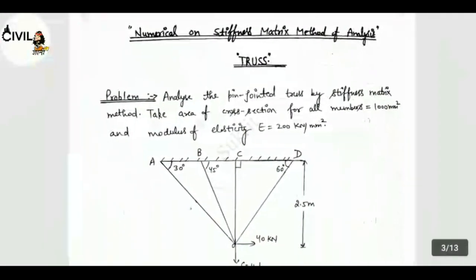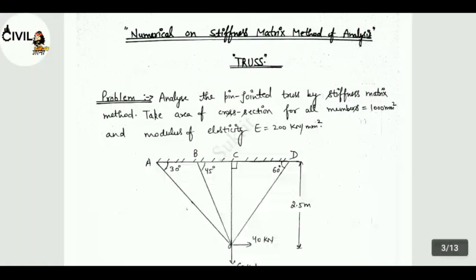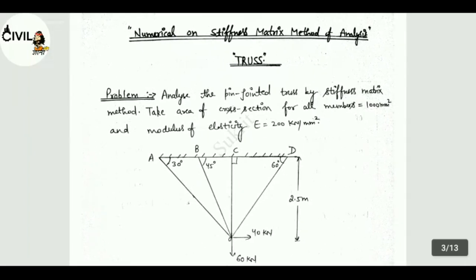See the numerical on stiffness matrix method of analysis. Example is truss. See the problem: analyze the pin jointed truss by stiffness matrix method. Take area of cross section for all members is equal to 1000 mm square and modulus of elasticity E is equal to 200 kN per mm square.